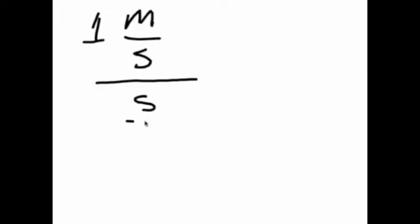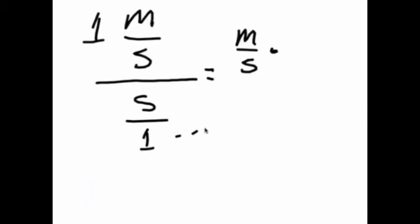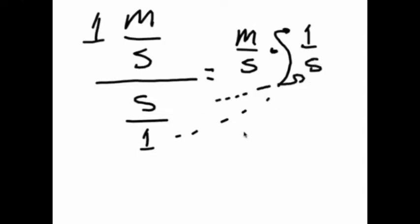It's because mathematically you're dividing meters per second by seconds over 1, and as you've probably learned in math, when you divide a fraction by another fraction, you flip the second fraction and multiply. So, meters per second times 1 over second equals meters per second squared.